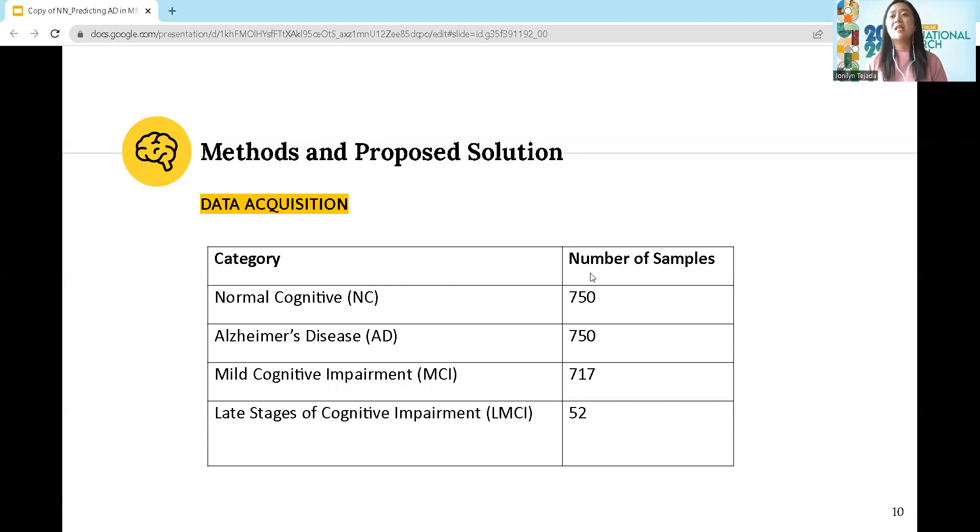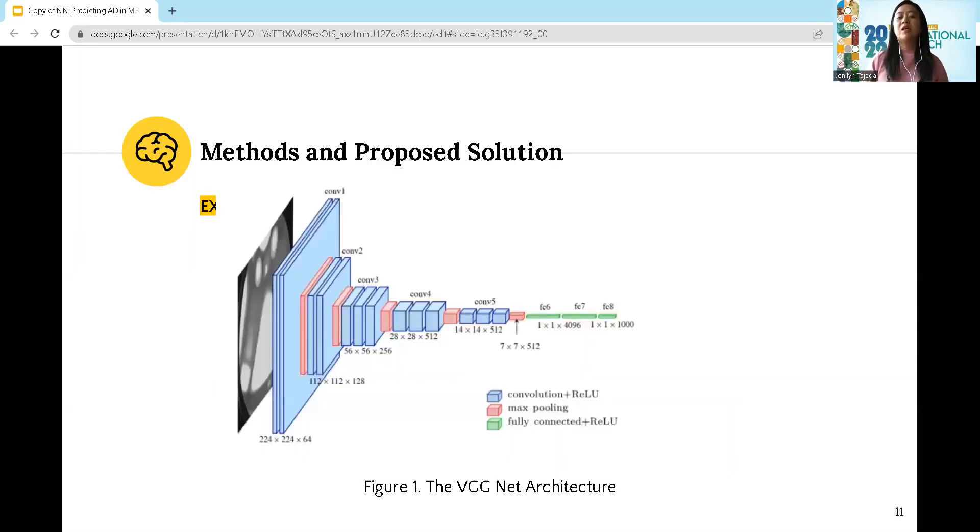The complete datasets available in Kaggle community is around 5,121 with equal distribution. However, because of the availability of hardware resources, I decided to downsize the sample images to almost equal distribution. We have NC 750, Alzheimer's disease (AD) 750, mild cognitive impairment 717, and 52 available brain scans for late stages of cognitive impairment.